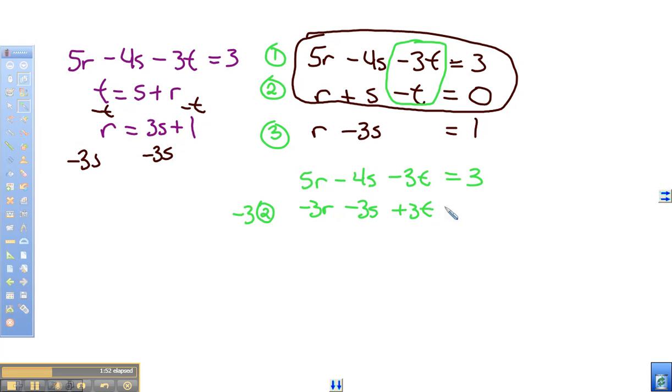And see, we'll get 2R, negative 4S minus 3S will give us minus 7S, 3T minus 3T, 0 equals 3. Now, now that I have these two equations, we've got 2R minus 7S equals 3.